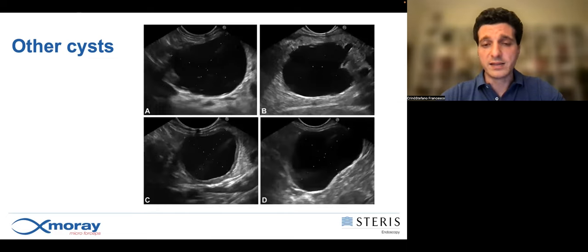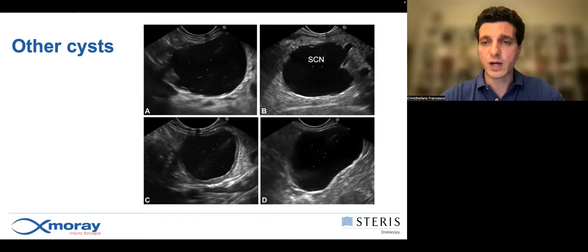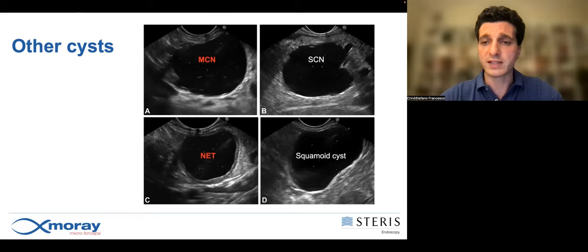This is an example of four similar pancreatic cysts — all unilocular — but their histotype is completely different. For example, this one is a serous cystadenoma. This one is a mucinous cystadenoma that requires resection. This one is a pancreatic neuroendocrine tumor, which also requires resection. And this one is a squamoid cyst that cannot be resected.